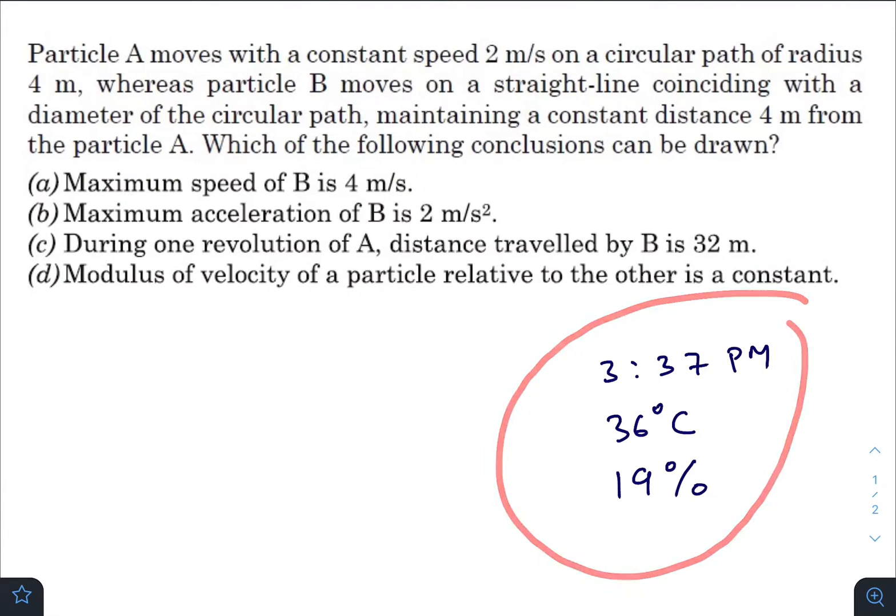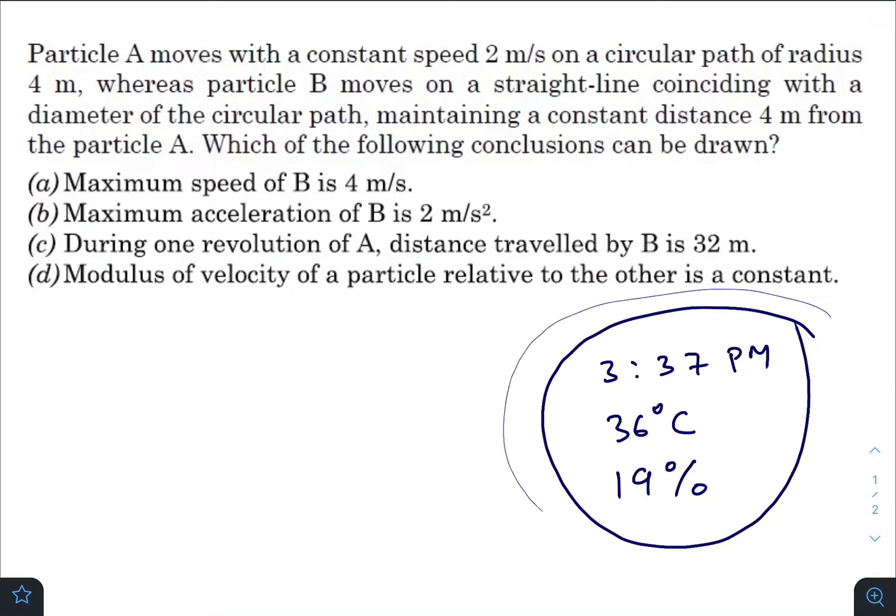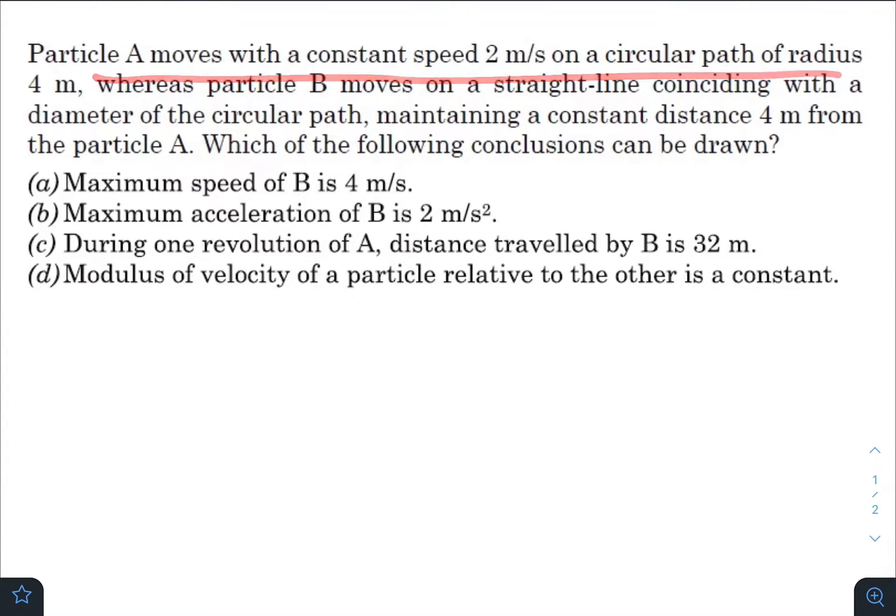Anyways, let us come to the question. Particle A moves with a constant speed of 2 m/s on a circular track of radius 4 m, whereas Particle B moves on a straight line coinciding with the diameter of the circular path, maintaining a constant distance of 4 m from Particle A. Which of the following conclusions can be drawn?